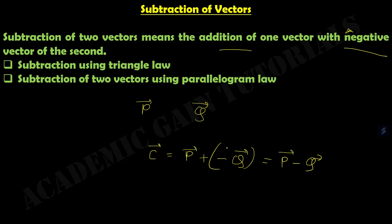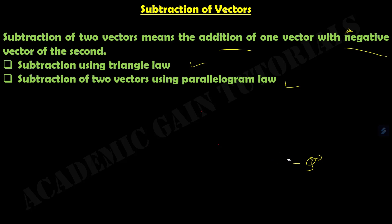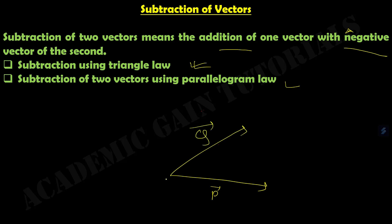Vector addition laws are also applicable in the case of vector subtraction. Here we will discuss the triangle law and the parallelogram law. Suppose P and Q are two vectors. This is vector P and this is vector Q, both acting on a point O. We mark this as A and this as B.